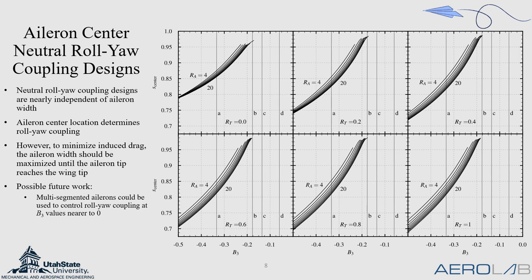Noting from the previous figures that the roll-yaw coupling is nearly independent of the aileron width, we can represent this data again, instead based on the aileron center. So that any aileron centered inboard of its neutral location will produce adverse yaw, any aileron centered outboard would produce proverse yaw.